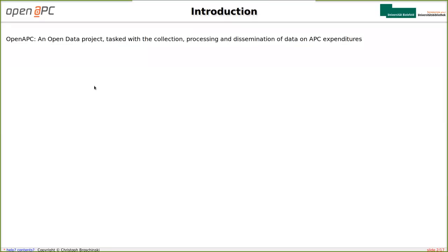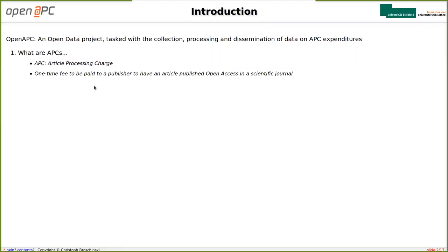To put it in a nutshell, OpenAPC is an open data project, and we are tasked with the collection, processing, and dissemination of data on APC expenditures. Most of you will be already familiar with the concept of APCs, but just for the sake of completeness, I'll also give a small introduction. An APC is an abbreviation for article processing charge — basically a one-time fee paid to a publisher when you want to publish an article open access in a scientific journal.